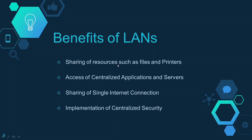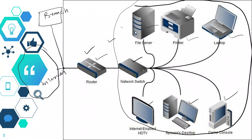LAN has many benefits, such as sharing of resources like files and printers. As we saw in the previous diagram, there was a printer connected to the LAN which can be used by all the devices because it is centrally connected to the switch. Similarly, access to centralized applications and servers can also be done through this LAN. Without this LAN arrangement, each device would need to be connected directly to the printer, which would be a big hassle.